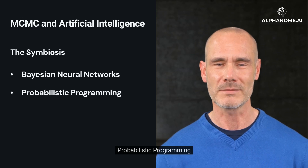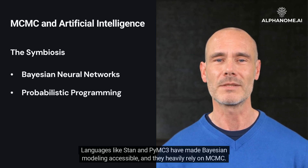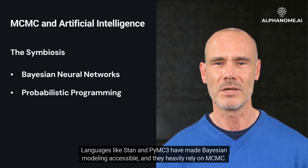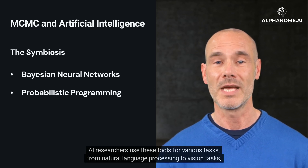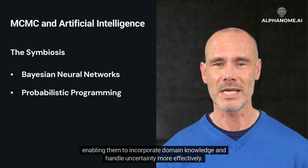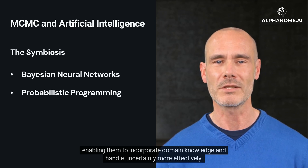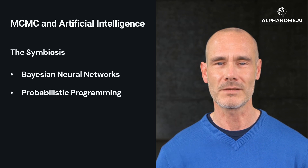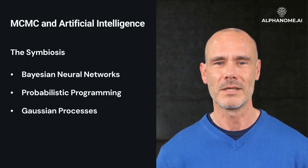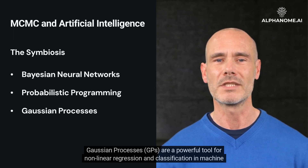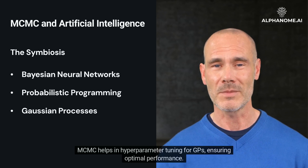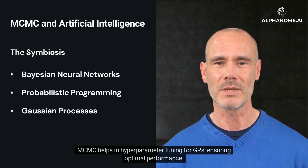Probabilistic programming: languages like STAN and PyMC3 have made Bayesian modeling accessible, and they heavily rely on MCMC. AI researchers use these tools for various tasks, from natural language processing to vision tasks, enabling them to incorporate domain knowledge and handle uncertainty more effectively. Gaussian Processes: GPs are a powerful tool for nonlinear regression and classification in machine learning. MCMC helps in hyperparameter tuning for GPs, ensuring optimal performance.